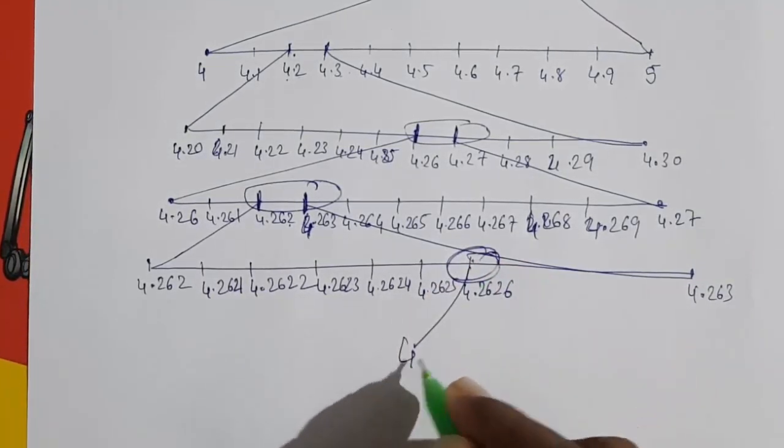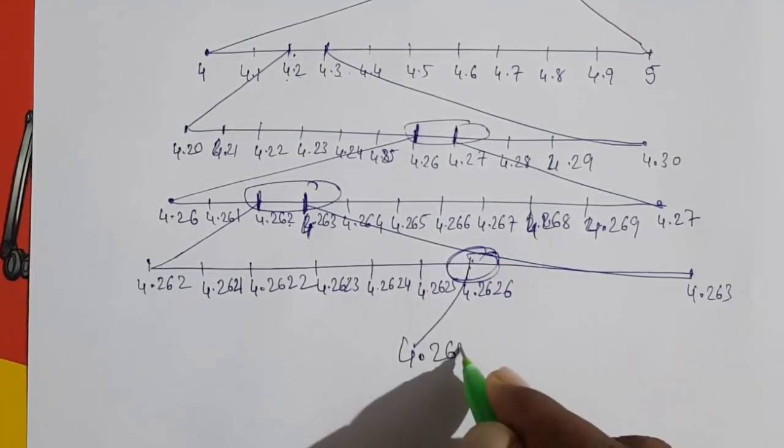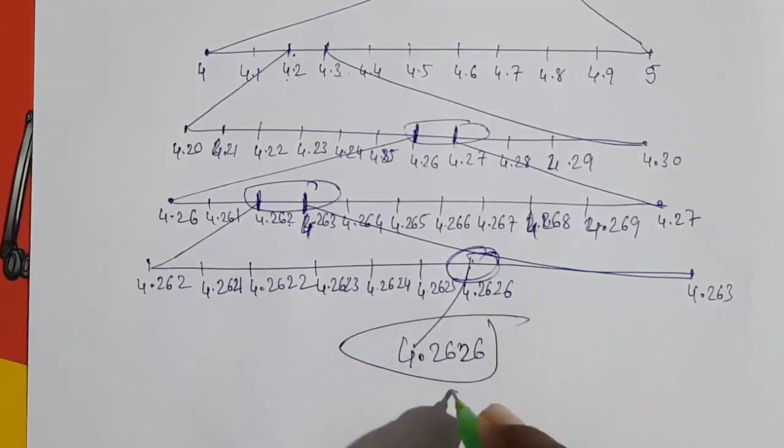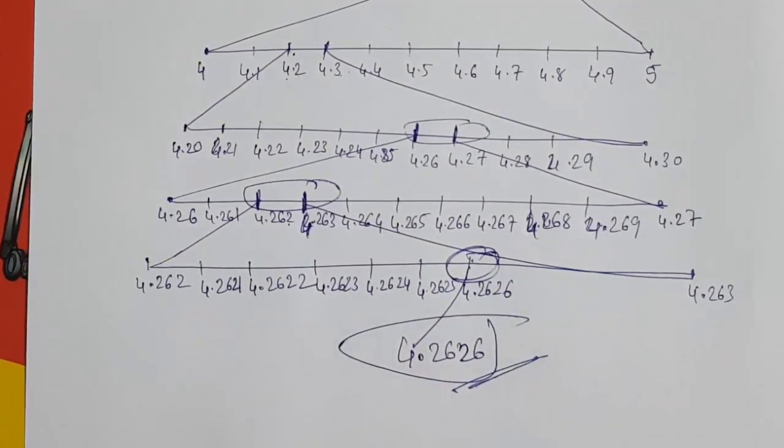So this way you can represent 4.2626 on the number line by magnifying method.